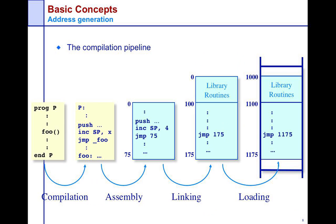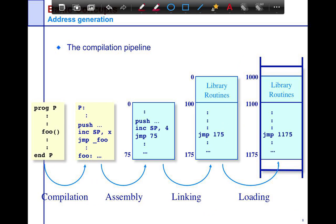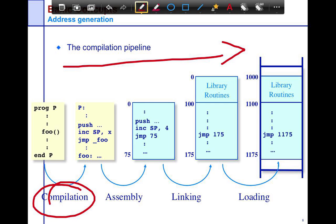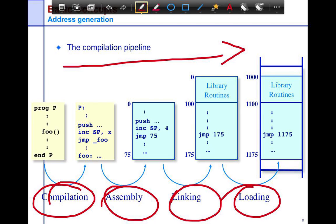In general, if you look at the compilation pipeline, you read this figure left to right. You have your compilation phase, your assembly phase, linking, and loading. This is a division of things you would have covered in your compiler class. Normally, you write your program — you write your function foo.